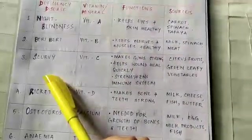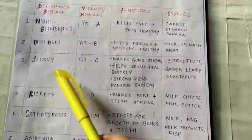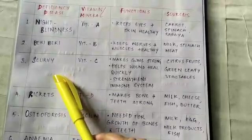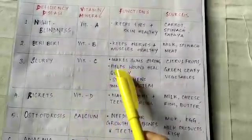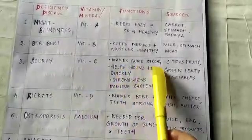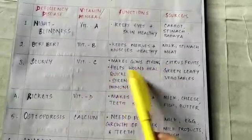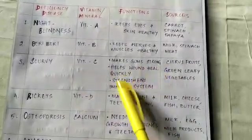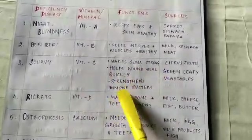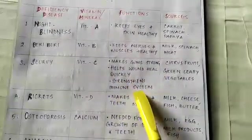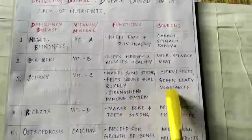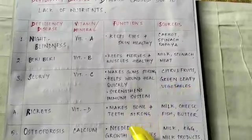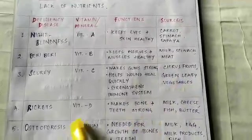Due to lack of vitamin C, a disease called scurvy is caused, which involves bleeding of gums. Vitamin C makes gums strong, helps wounds heal quickly, and strengthens the immune system. Sources include citrus fruits and green leafy vegetables.